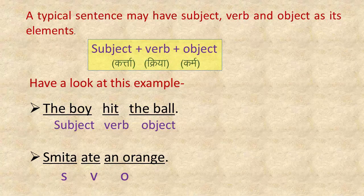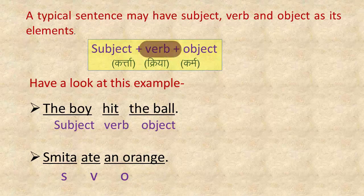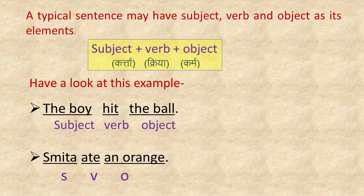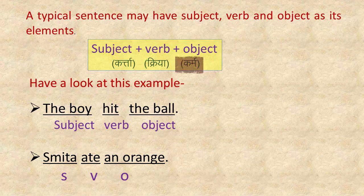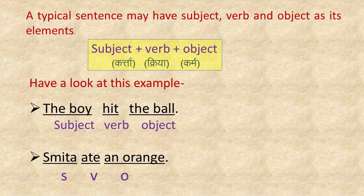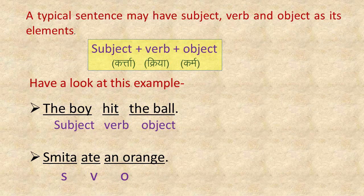We just read about the elements of a typical sentence, which are subject, verb, and object. The subject tells about the person or thing we speak about, verb is an action word, and the object is generally a noun that is needed by the verb to give complete sense.